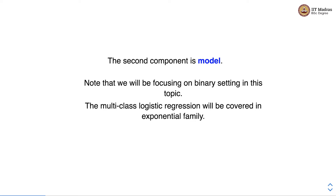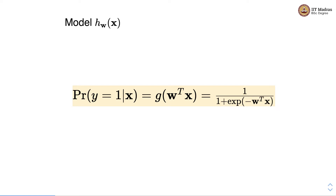The second component is the model. We will be focusing on the binary setting in this topic; multi-class logistic regression will be covered in the exponential family. We represent the model as h sub w of x, where x is a feature vector. We compute the probability that y equals 1 — that is, y belongs to class 1 — given the feature vector, and that is computed as g of w transpose x. Since g is a sigmoid or logistic function, it is calculated as 1 divided by 1 plus exponential of minus w transpose x.